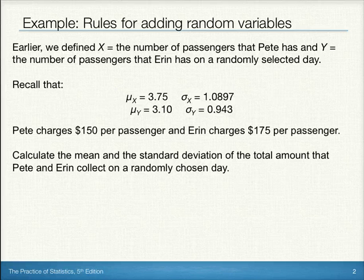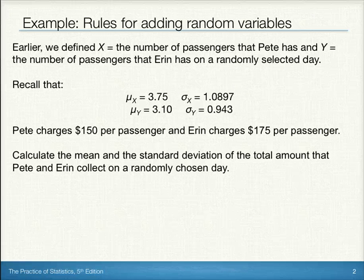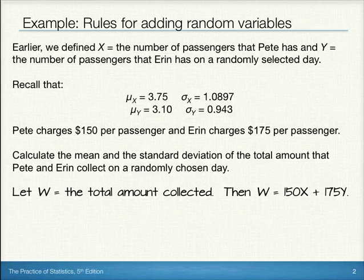Also recall, Pete charges $150 per passenger and Aaron charges $175 per passenger. Let's let W, a new random variable, equal the total amount collected.